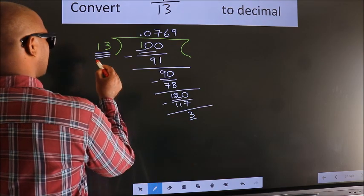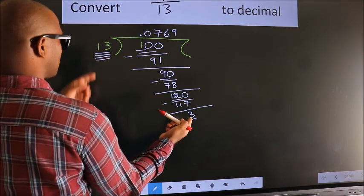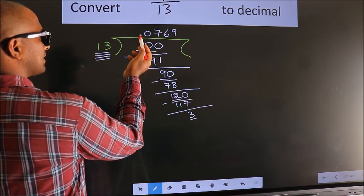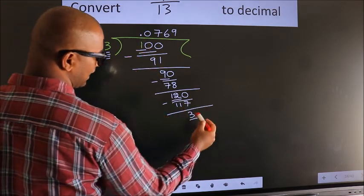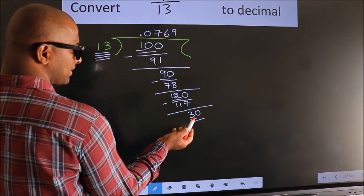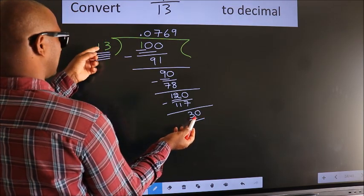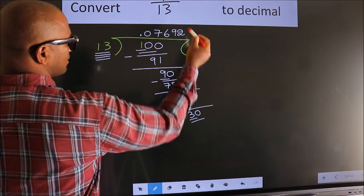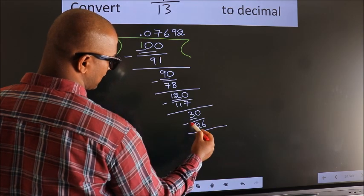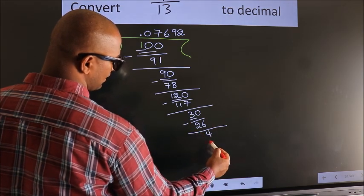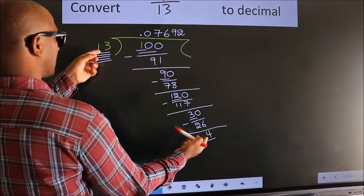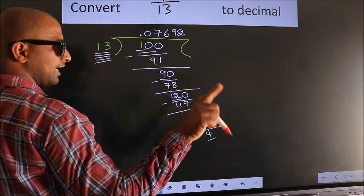We have 3 here. 3 is smaller than 13, and we already have the decimal so we can directly bring a 0 — so 30. A number close to 30 in the 13 times table is 13×2=26. Now we subtract and we get remainder 4. We have 4 here; 4 is smaller than 13, so bring a 0 to get 40.